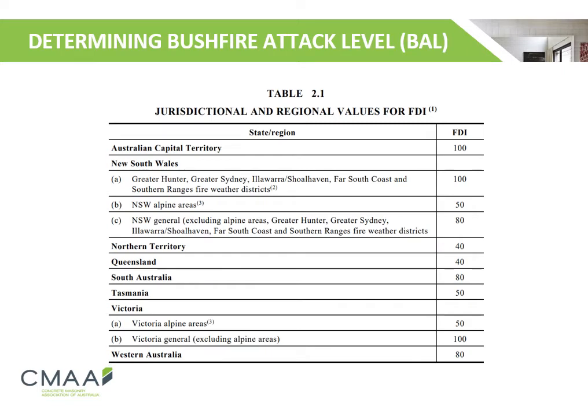Here we have a table that represents the fire danger index for different regions in Australia. Regions with different biomes such as New South Wales and Victoria have different fire danger indexes to accurately depict the fire danger potential.